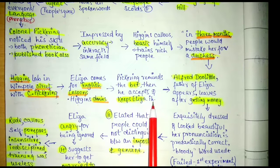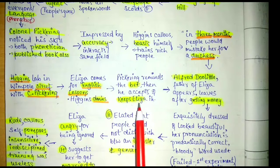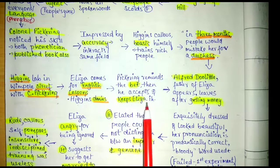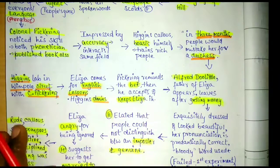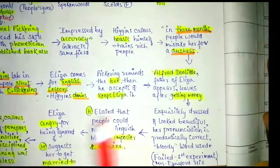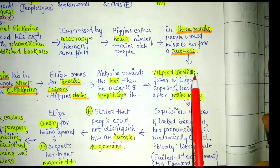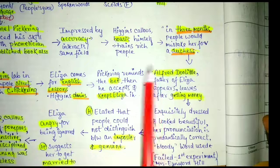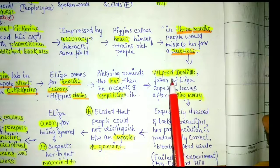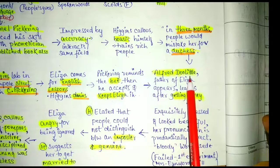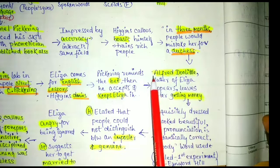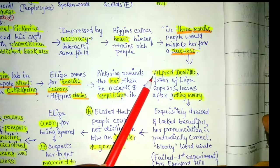Higgins keeps Eliza in his home and her training starts. At first she was given a shower by a housemaid and everything was arranged for the training. At that point another person comes into the house of Higgins — it was Alfred Doolittle. The full name of Eliza is Eliza Doolittle, and her father's name is Alfred Doolittle.